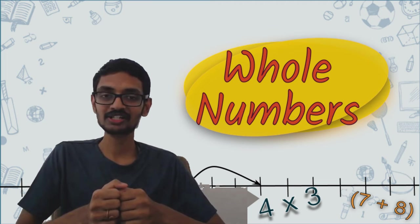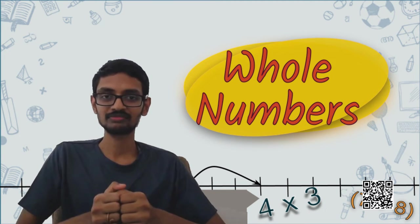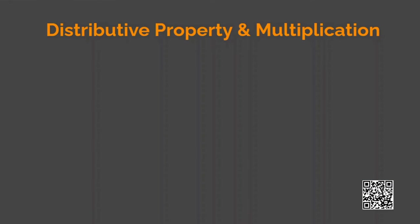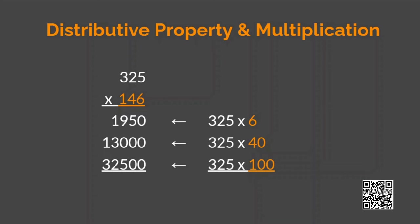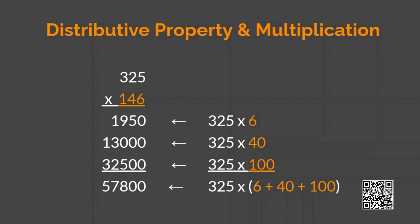If you have observed, the multiplication method that you have learnt in your previous classes also uses distributive property. Here we have the product 325 into 146. In the usual multiplication method, you first multiply 6 with 325 from right to left, then you multiply 40 with 325, and finally you multiply 100 with 325. At the end, you add all these partial products to get the final product. You can see that we are splitting 146 as 100 plus 40 plus 6 and 325 is distributed over this.